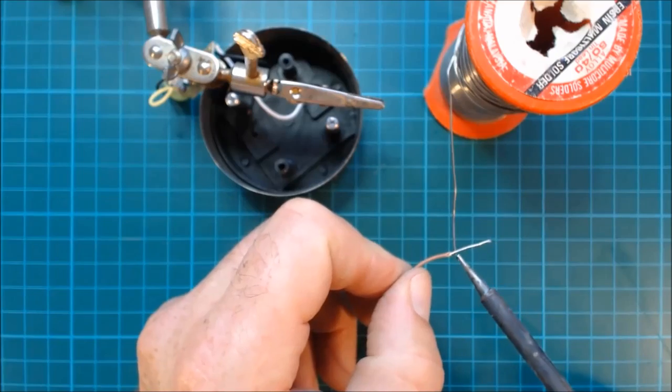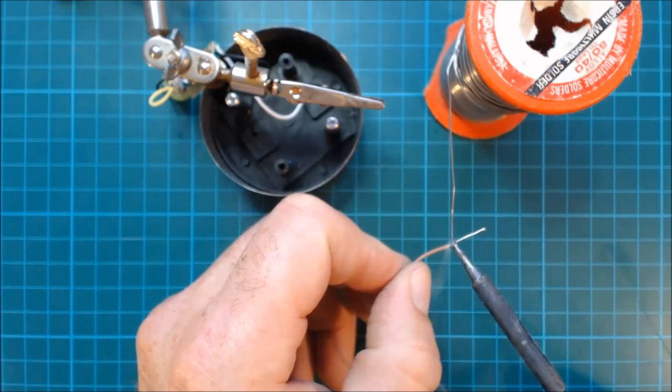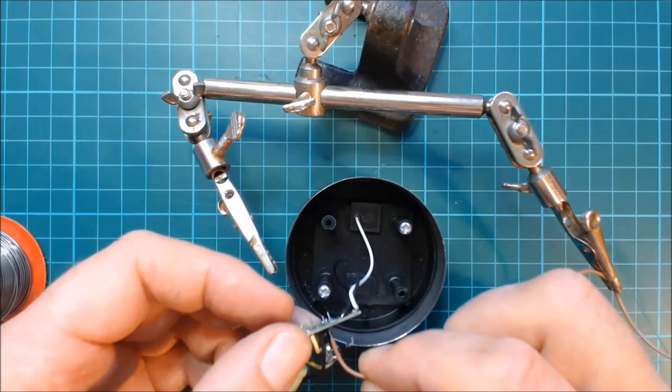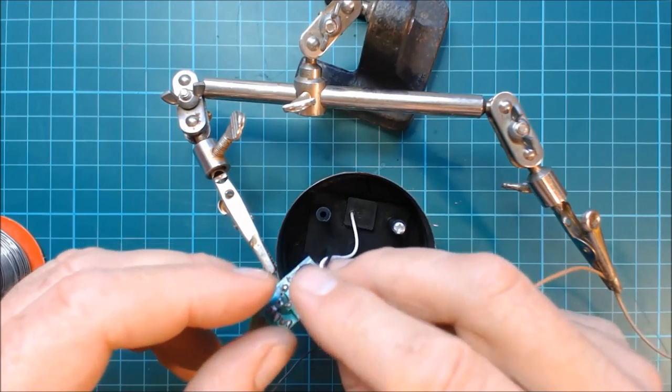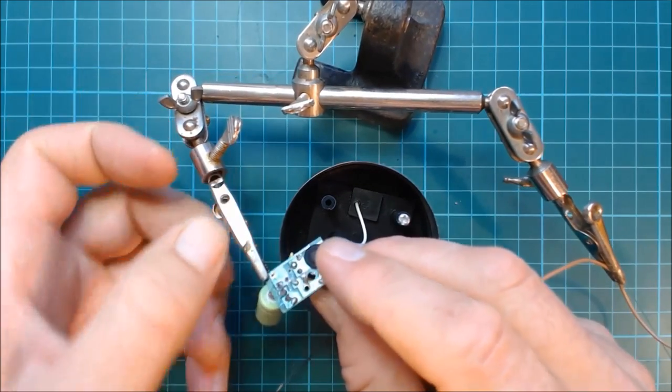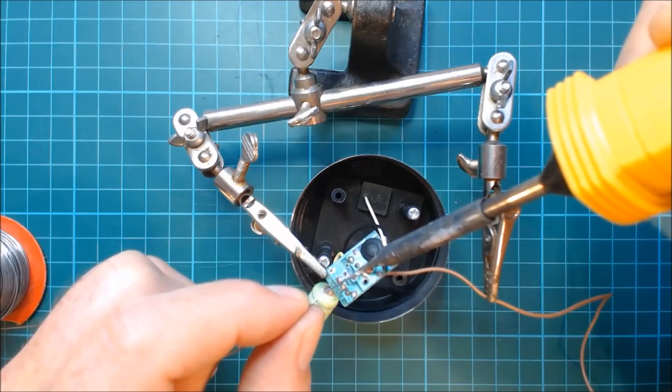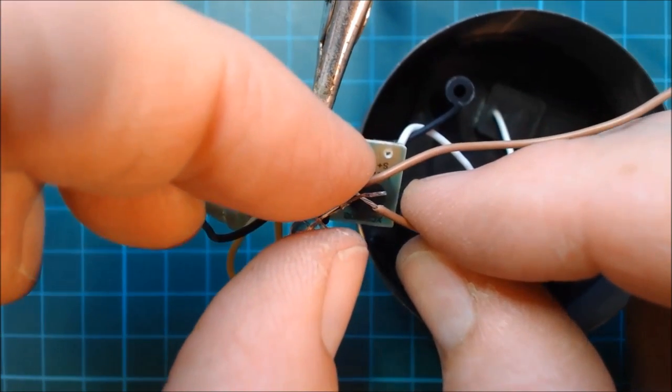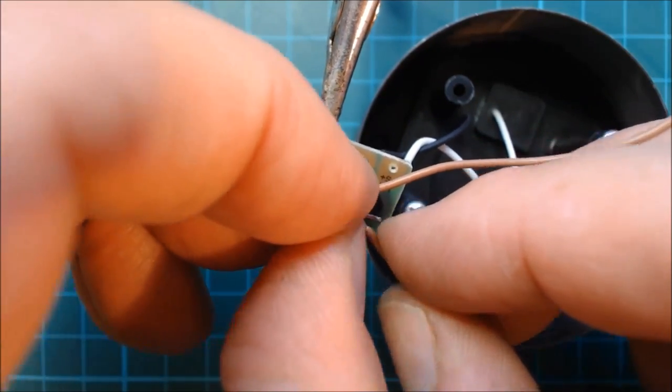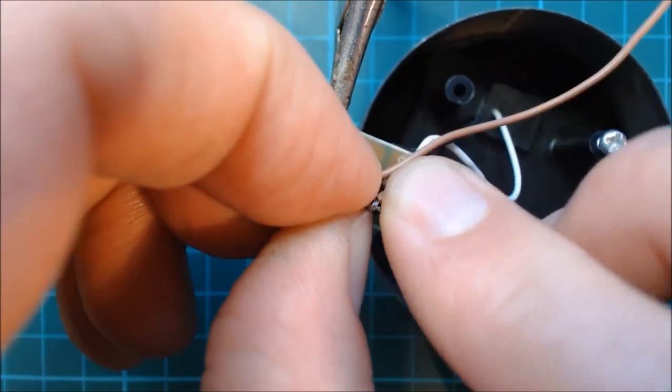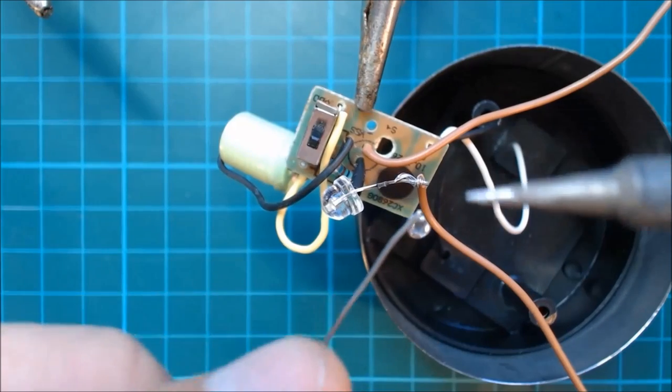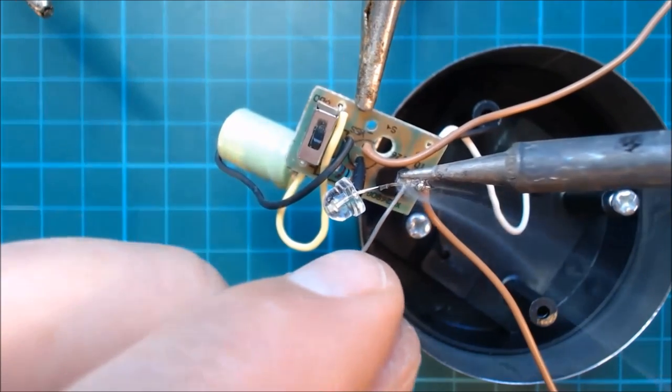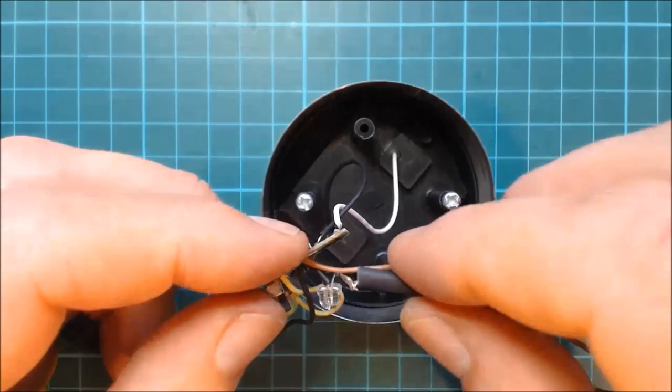Prepare a length of insulated wire and tin it ready to solder into the PCB. Insert the wire into the PCB hole where we removed the LED lead. And then solder it in place. Prepare another length of insulated wire and wrap it around the free lead on the LED. Solder it and cover with heat shrink tubing.